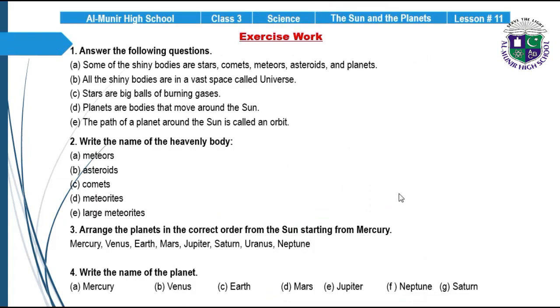Next, students, we have the solved exercise of Lesson Number 11. Question number 1: Answer the following questions. Part A: Some of the shiny bodies are stars, comets, meteors, asteroids, and planets. Part B: All the shiny bodies are in a vast space called universe. Part C: Stars are big balls of burning gases. Part D: Planets are bodies that move around the Sun. Part E: The path of a planet around the Sun is called an orbit. Question number 2: Write the name of heavenly body. A: meteors, B: asteroids, C: comets, D: meteorites, E: large meteorites.